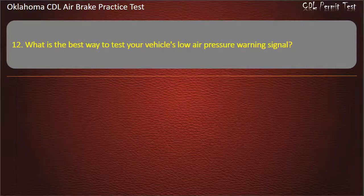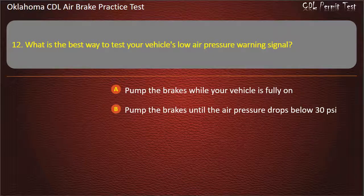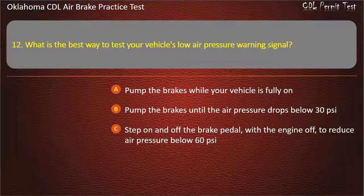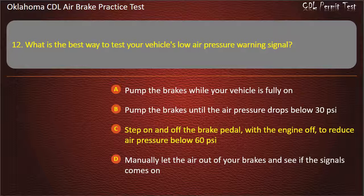Question 12. What is the best way to test your vehicle's low air pressure warning signal? Pump the brakes while your vehicle is fully on; pump the brakes until the air pressure drops below 30 pounds per square inch; step on and off the brake pedal with the engine off to reduce air pressure below 60 pounds per square inch; or manually let the air out of your brakes and see if the signal comes on. Answer: Step on and off the brake pedal with the engine off to reduce air pressure below 60 pounds per square inch.